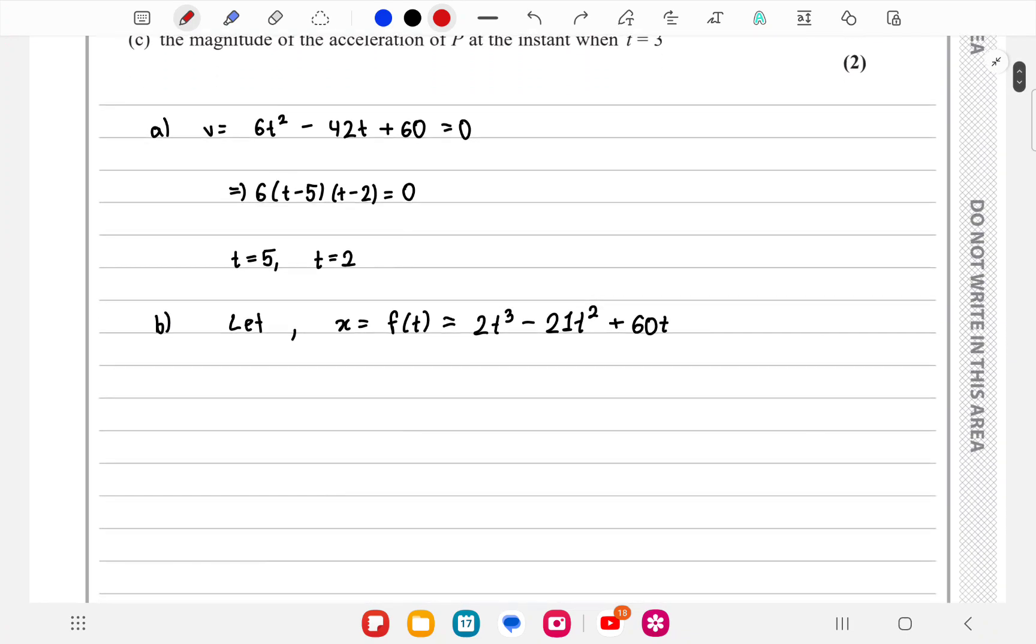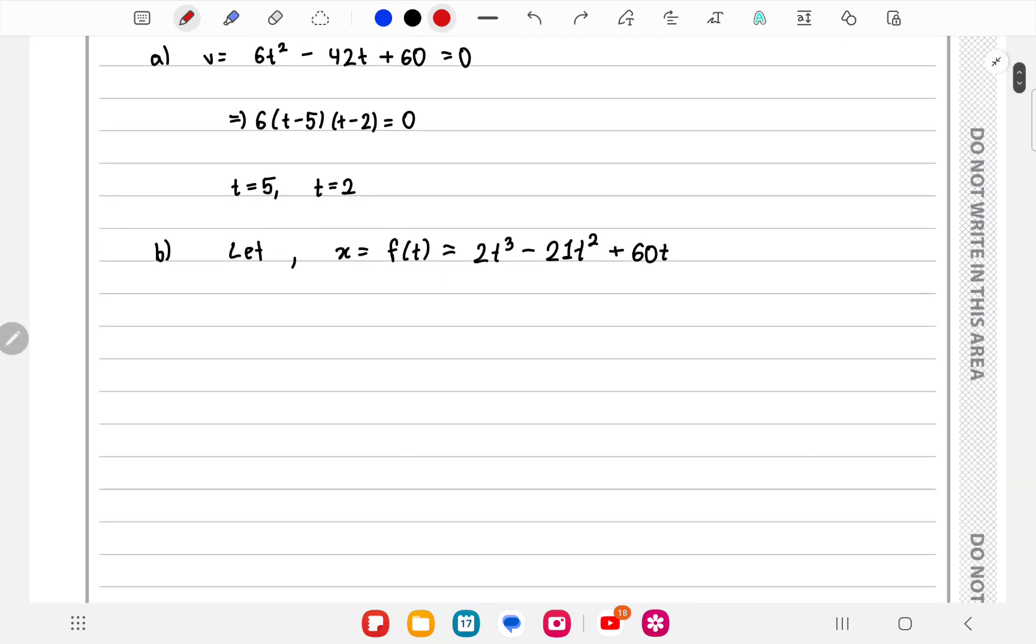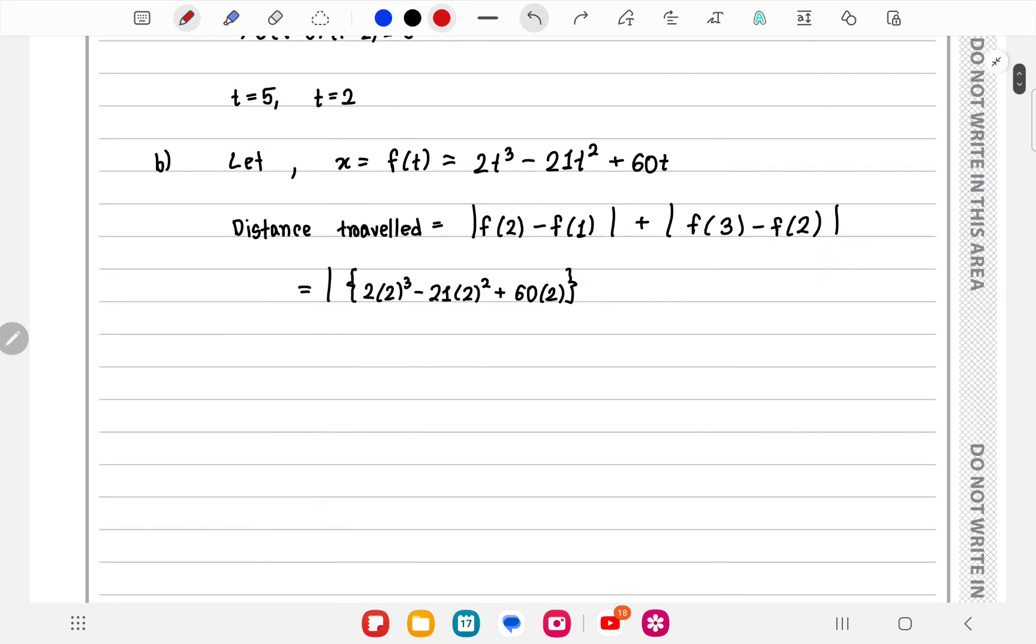We can write x equals to f of t and the distance traveled will be f2 minus f1 in a modulus plus f3 minus f2 in a modulus. f2 minus f1 would be, f2 is 2 into 2 cube minus f of 1.